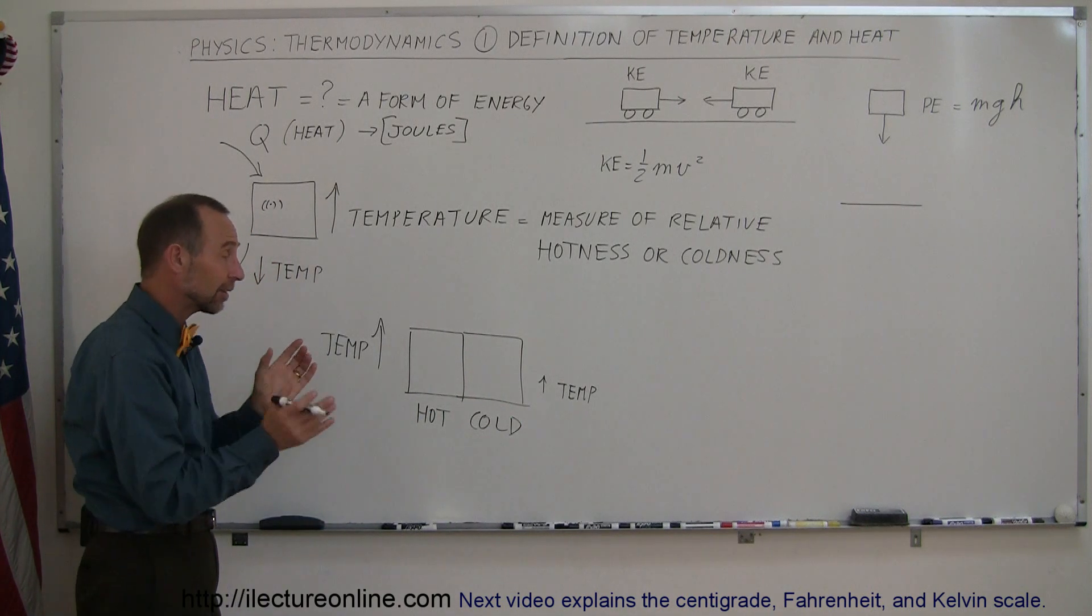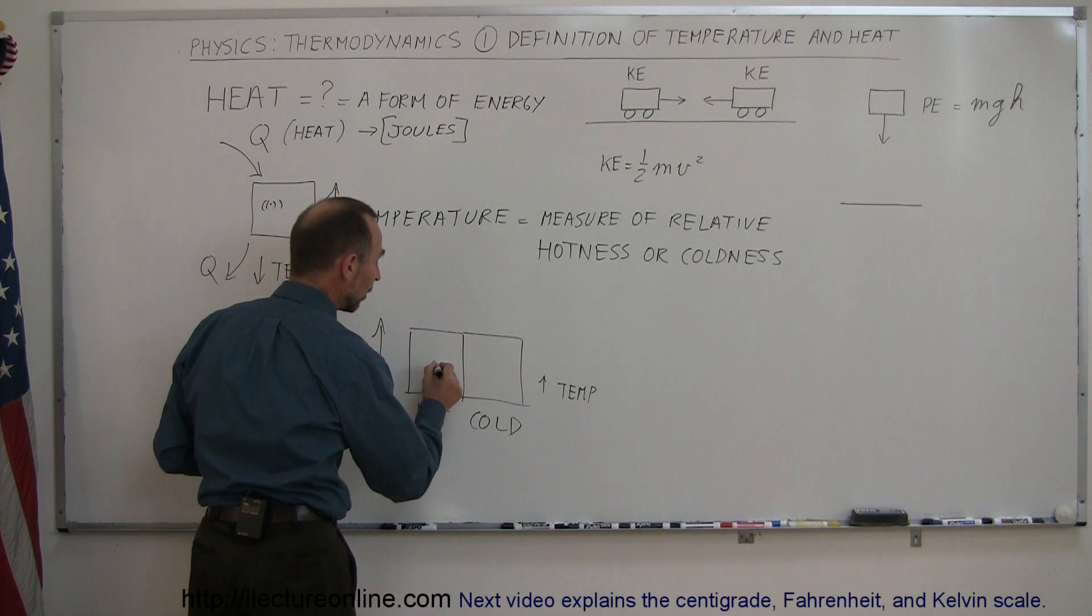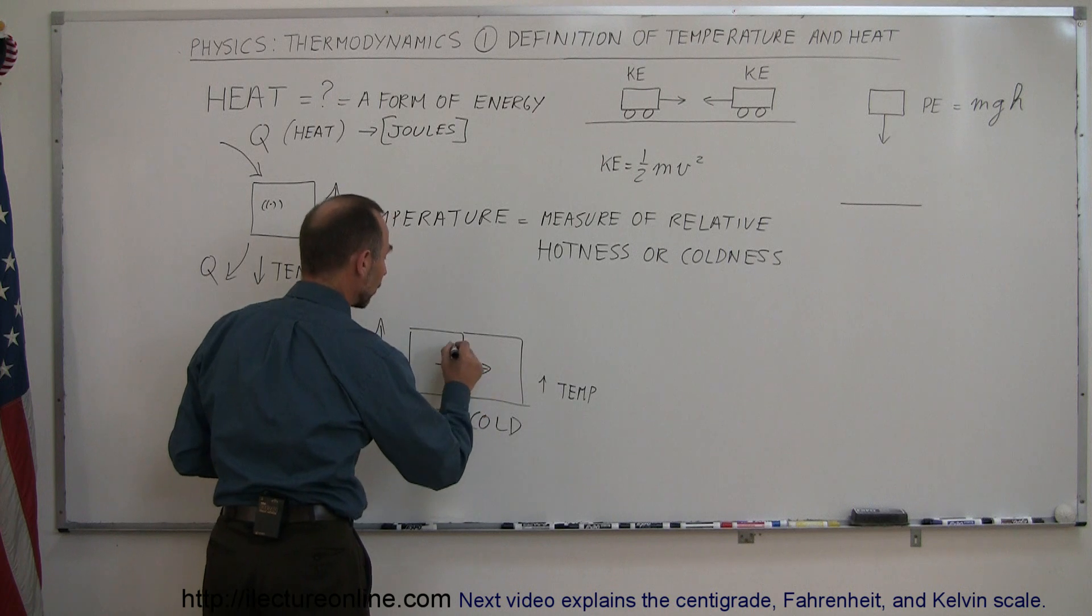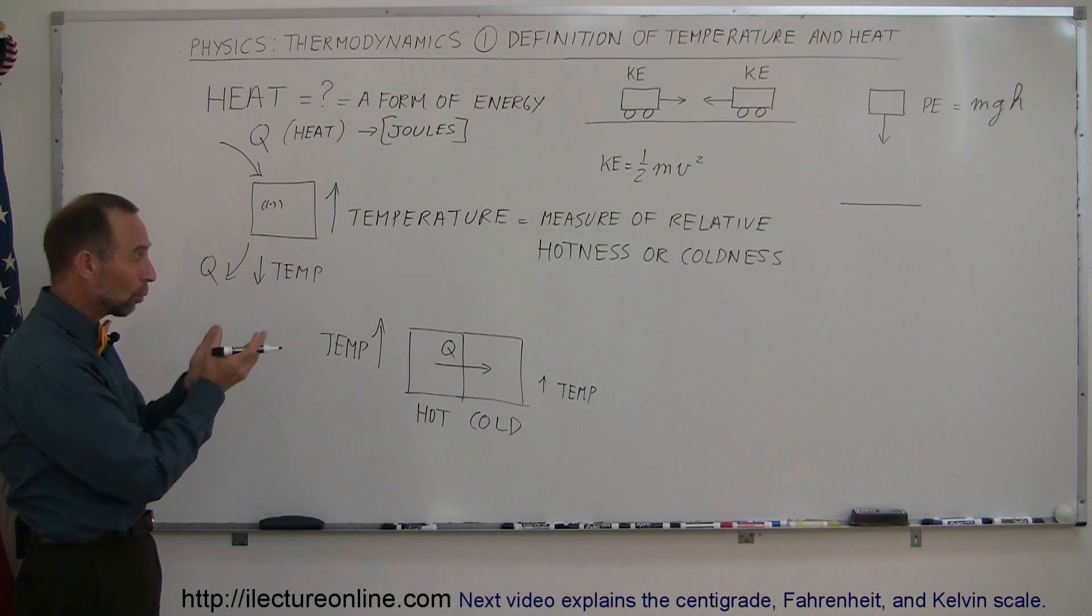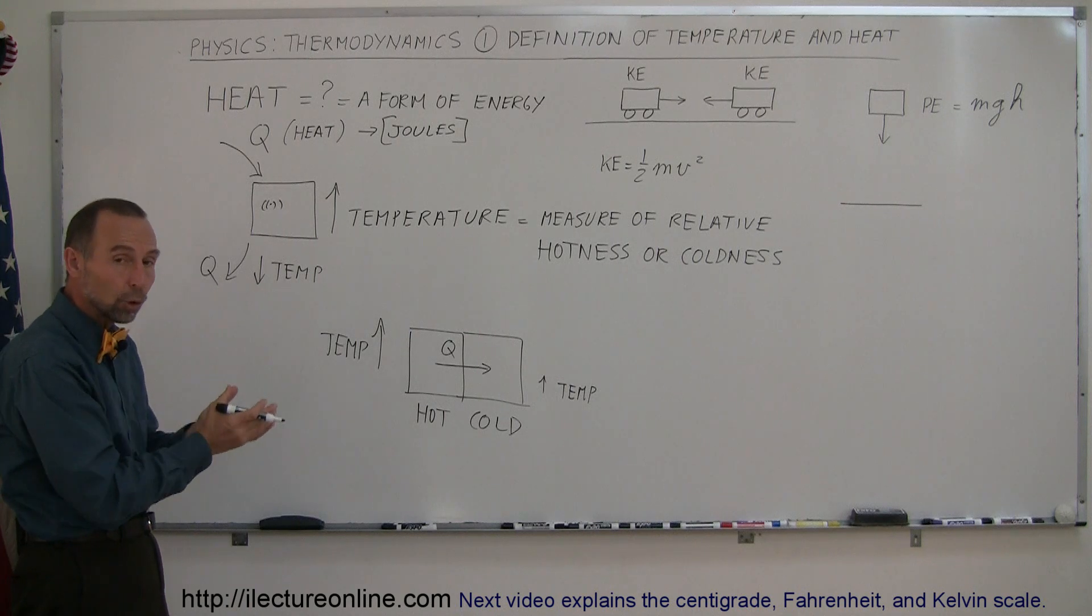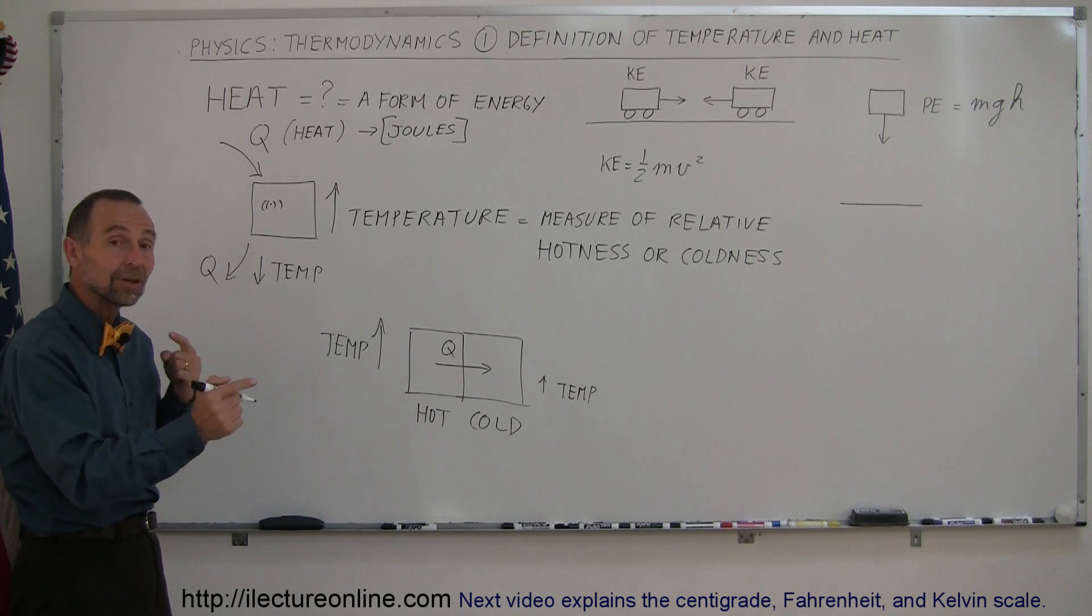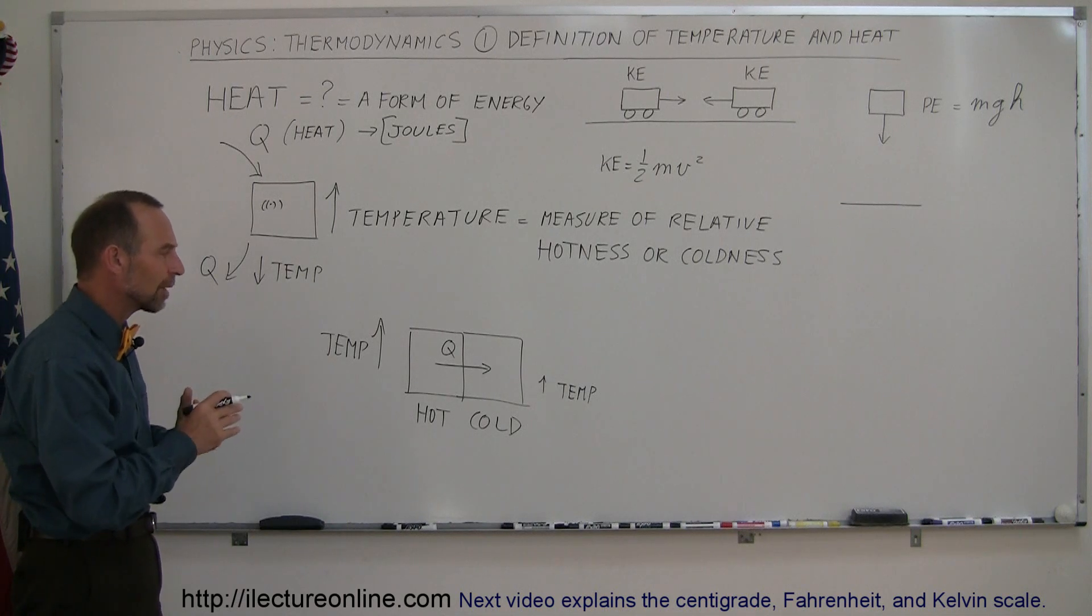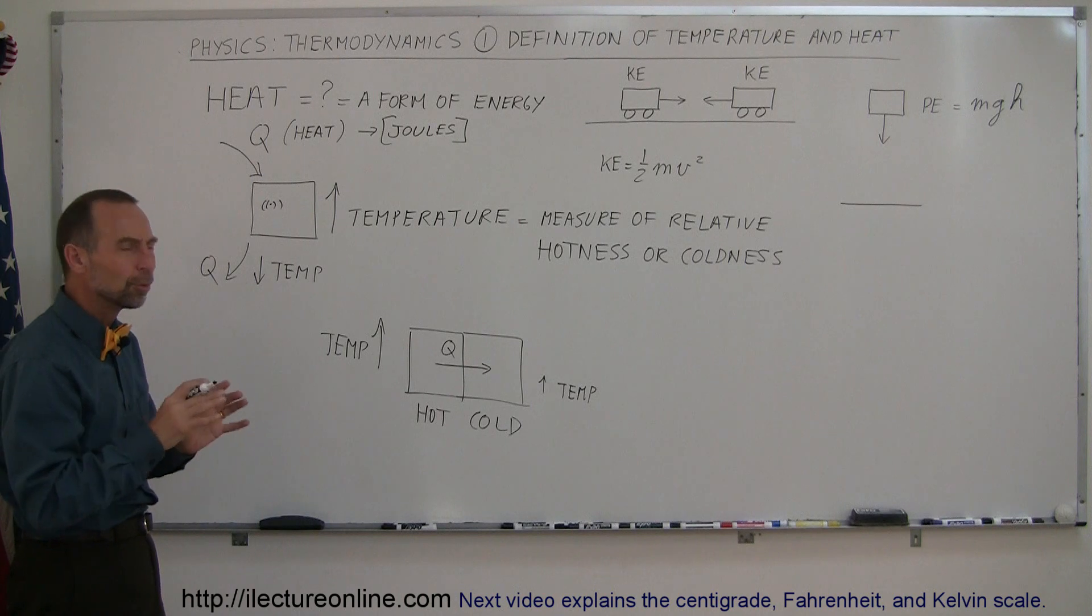Now when you put two objects together that are a different temperature, what's going to happen is that the hot object will lose heat. Q is going to flow from the hot object to the cold object, which will cause the hot object to get cooler and the cold object to get warmer, and it will continue doing that until the two objects are at the very same temperature. At that point, we reach what we call thermal equilibrium.